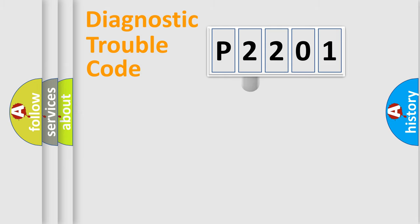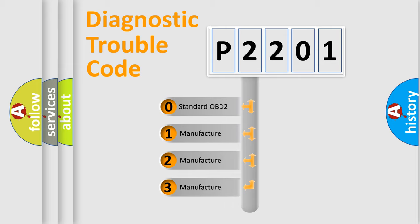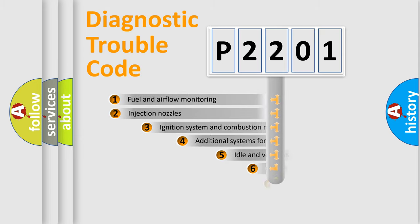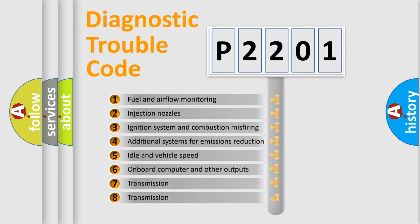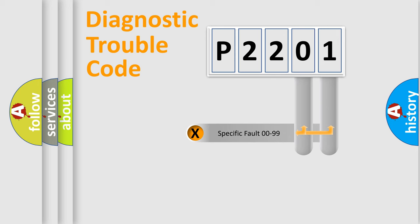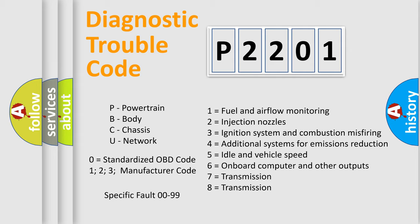This distribution is defined in the first character of the code. If the second character is expressed as zero, it is a standardized error. In the case of numbers 1, 2, or 3, it is a manufacturer-specific error expression. The third character specifies a subset of errors. This distribution is valid only for the standardized DTC code, and only the last two characters define the specific fault of the group.